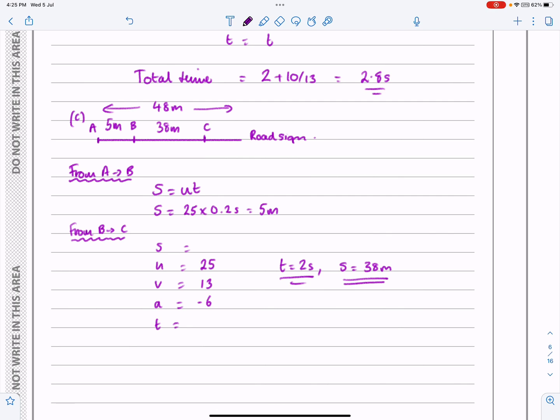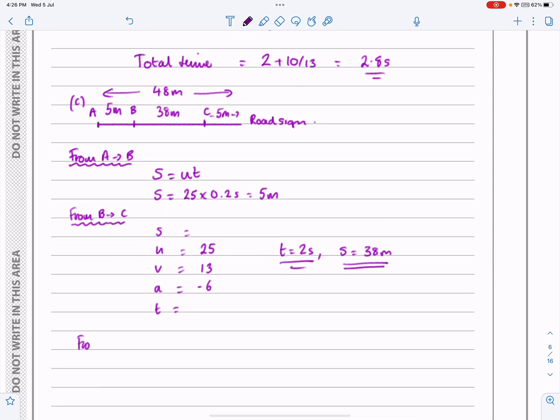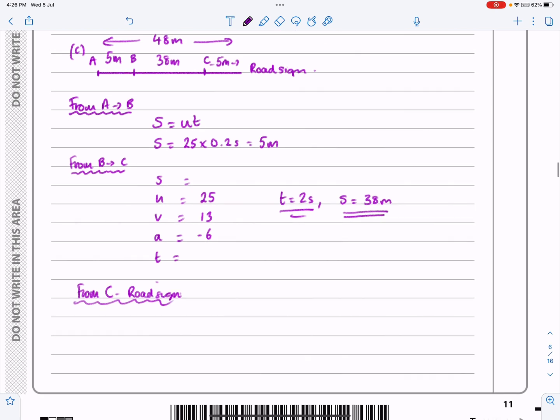The last little bit, we now know it's going to be travelling 5 metres again. From the fact this plus this plus this must work out to be equal to 48. So from C to the road sign, it's a constant speed again. I'm not going to spend ages doing this. S is going to be equal to UT. I know that it travels 5 metres. It's going at 13 metres per second. So let's work out what T is. T will be 5 over 13 this time.